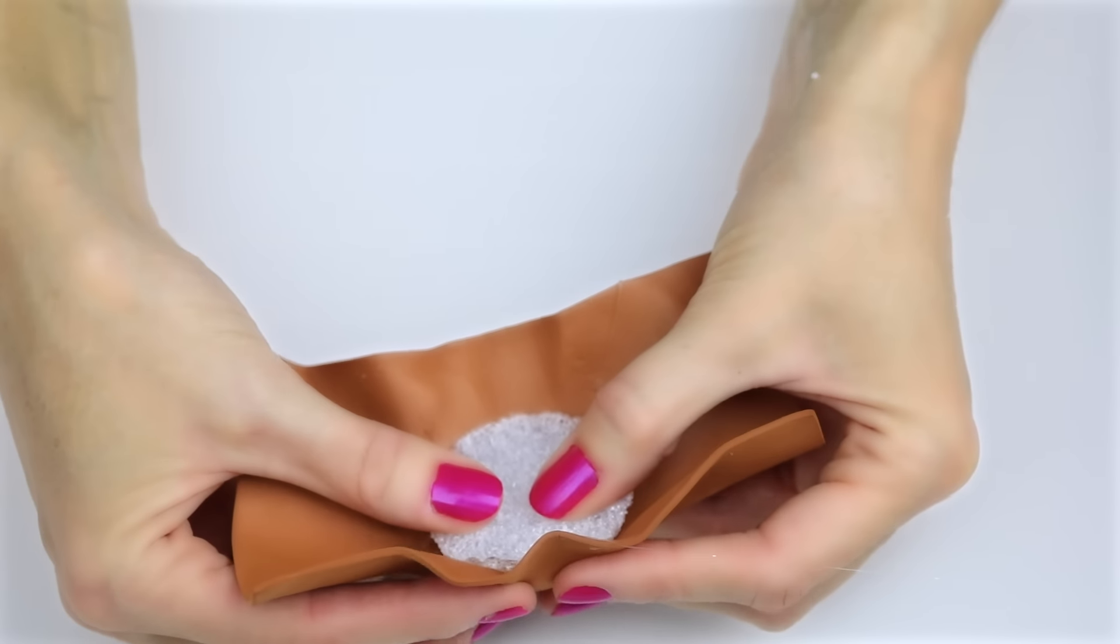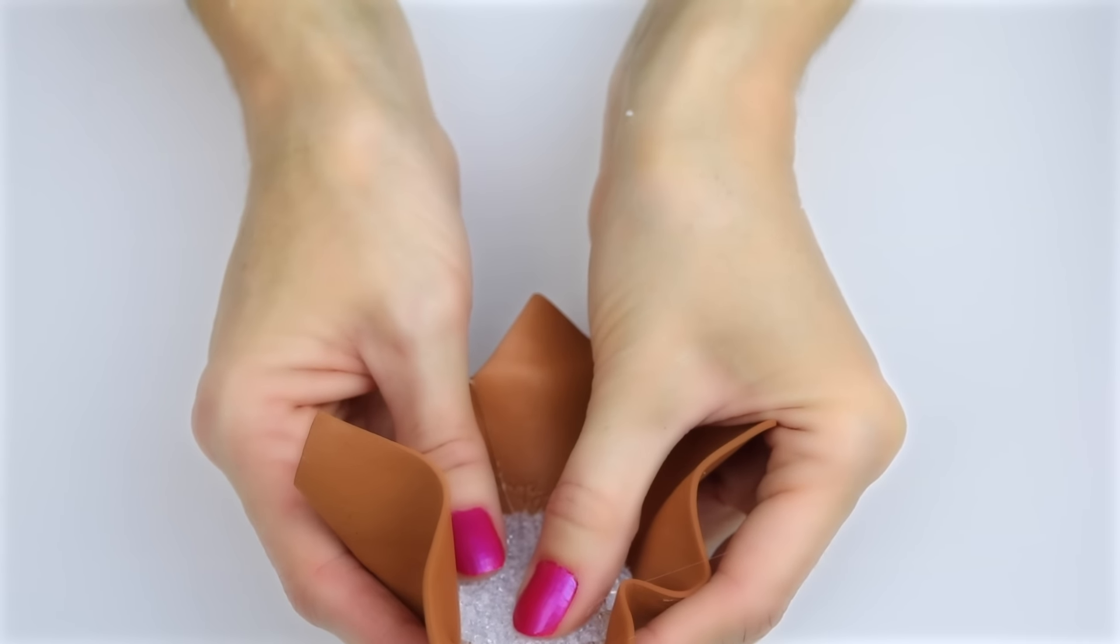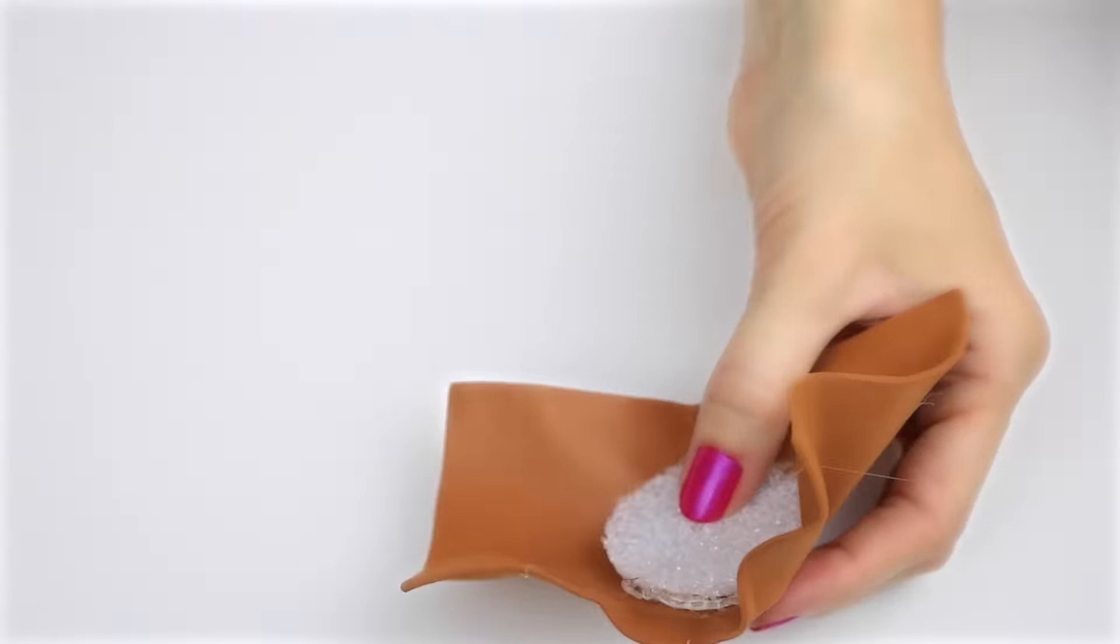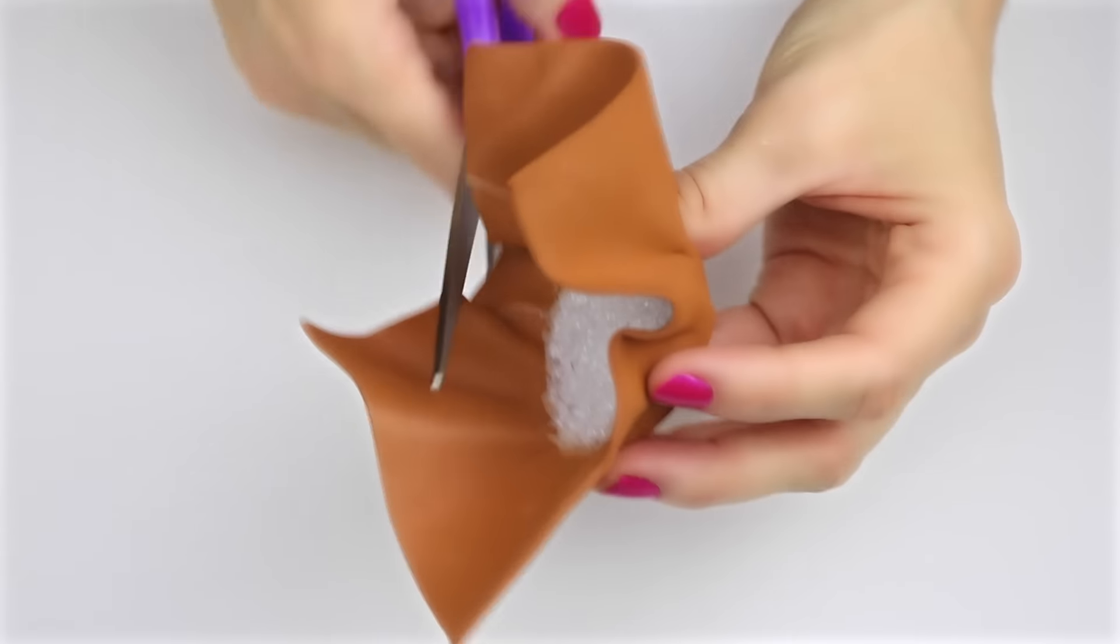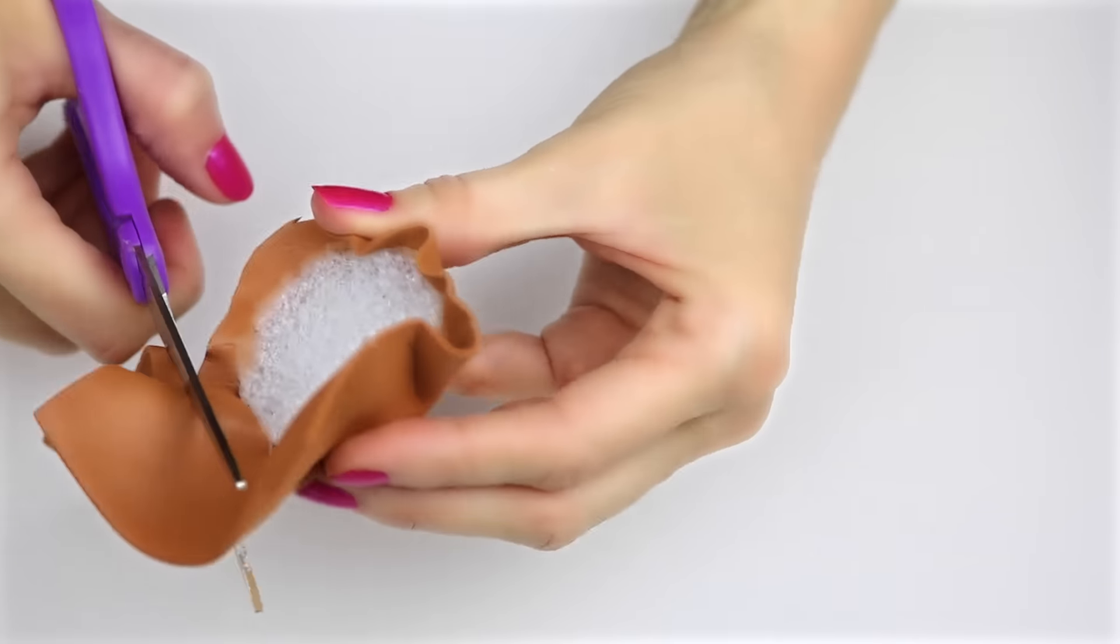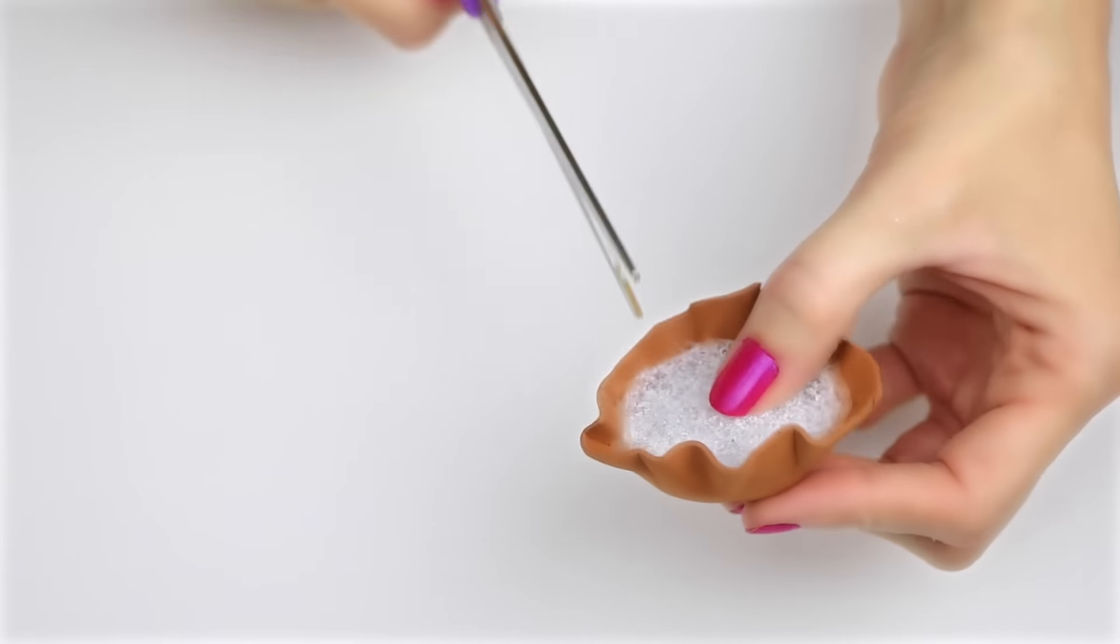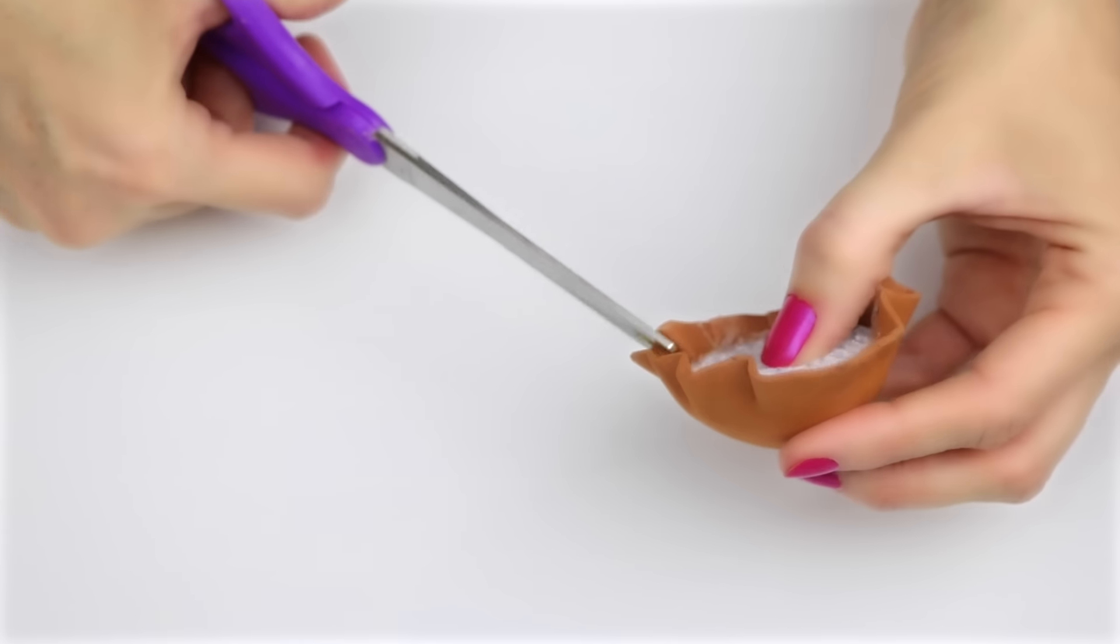Hot glue around the edges to hold in place. Trim off any excess, leaving enough foam to fold over to the styrofoam. Cut around the foam, then hot glue to hold in place.